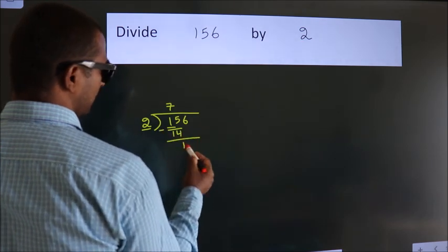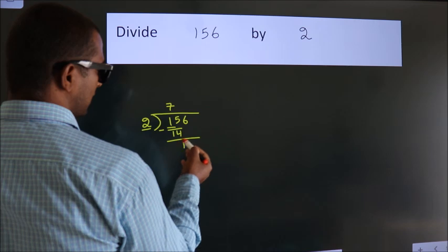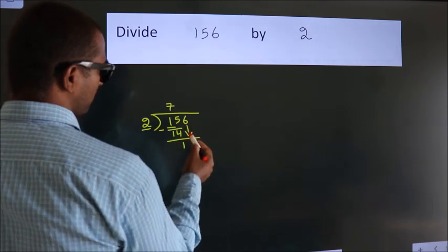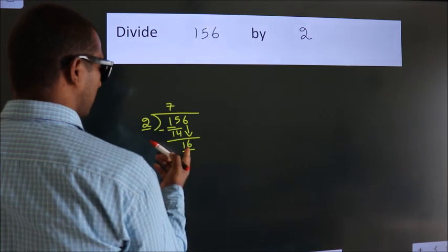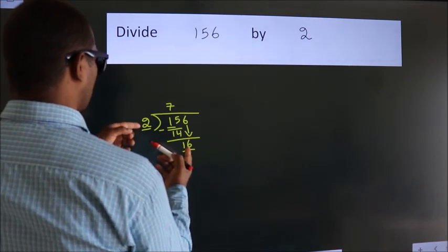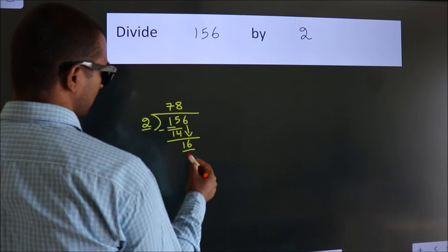We get 1. After this, bring down the next number, so 6 comes down, giving us 16. When do we get 16 in the 2 table? 2×8=16.